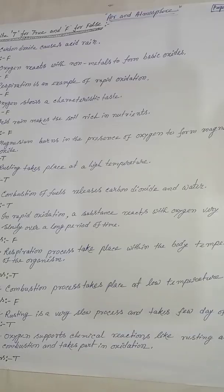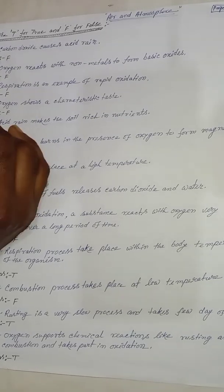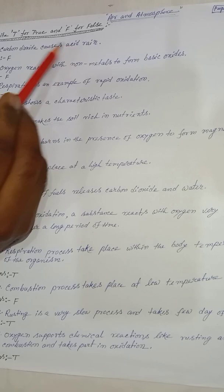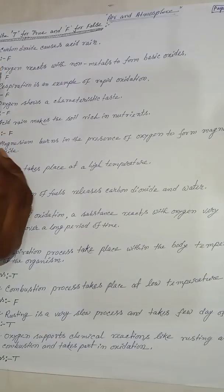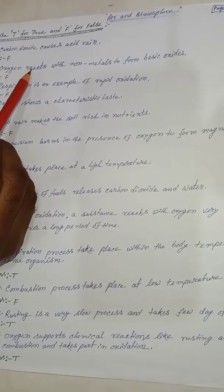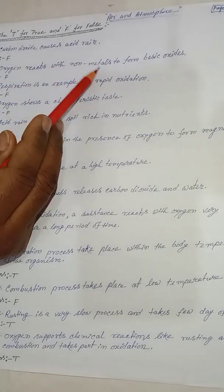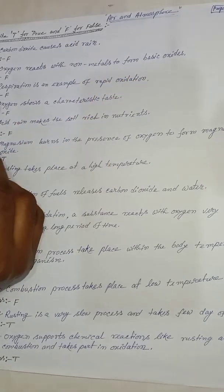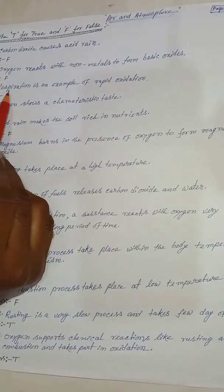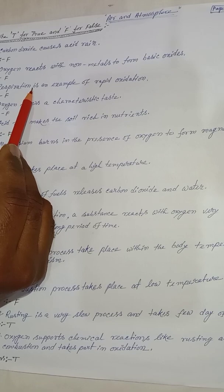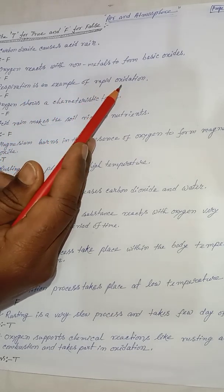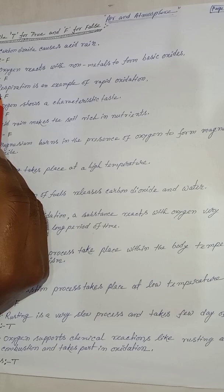Now discuss true and false. Carbon dioxide causes acid rain — false. Oxygen reacts with non-metals to form basic oxide — false. Respiration is an example of rapid oxidation — false.